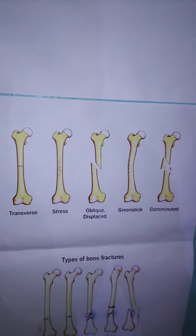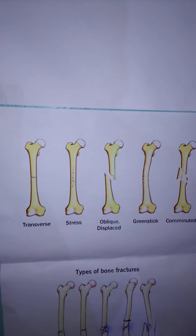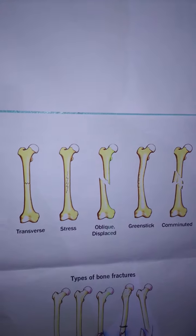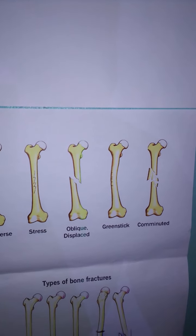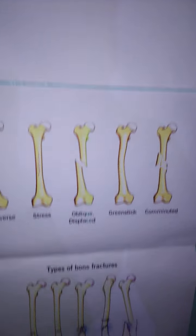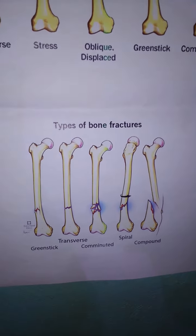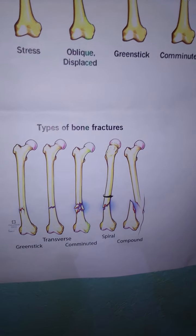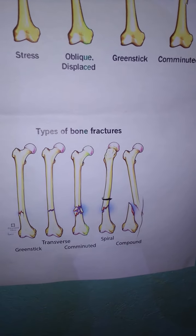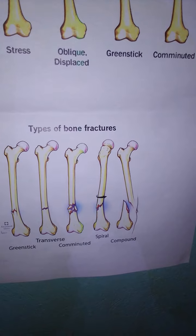Here are diagrams of the fractures: a transverse fracture, a stress fracture, an oblique fracture, a greenstick fracture, a comminuted fracture, a spiral fracture, and also a compound fracture.